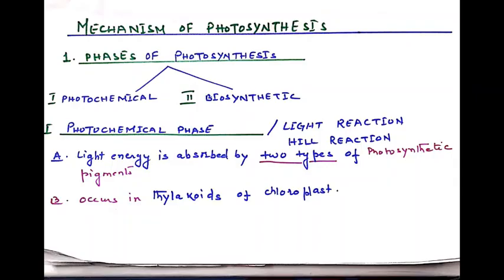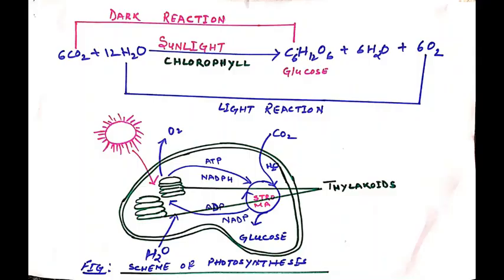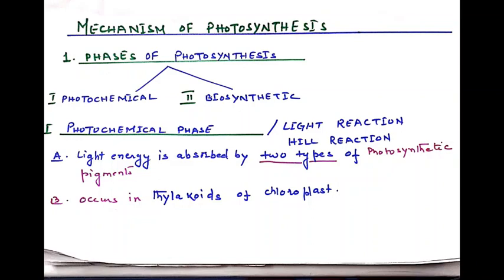Photosynthesis is a photobiochemical process by which green plants and other phototropes synthesize organic compounds from carbon dioxide and water in presence of sunlight and pigments. Now students, for medical and in class 11, the definition of photosynthesis is it is the photobiochemical process which is used by green plants and other phototropes.